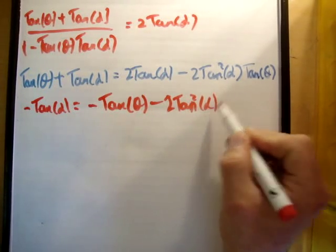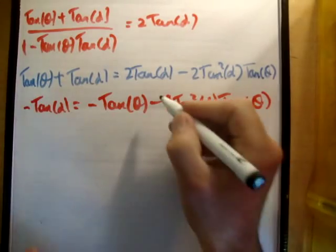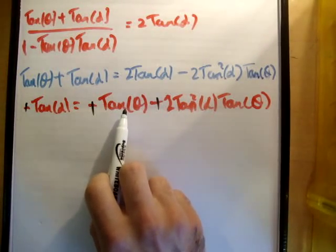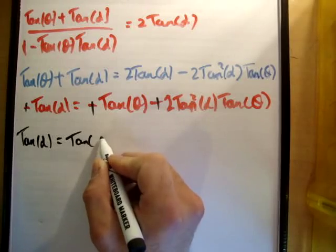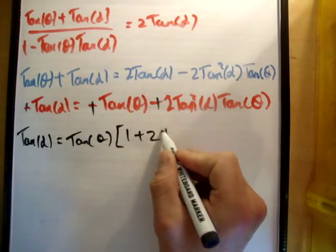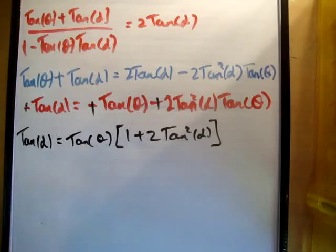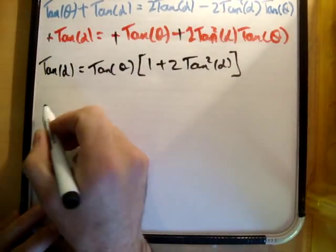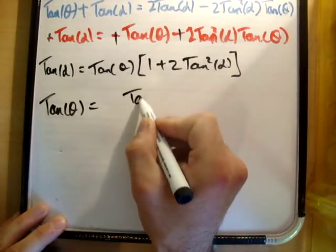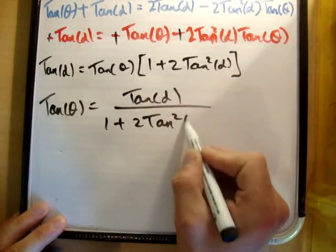We have a tan alpha on both sides, so rearranging gives tan alpha equals tan theta plus 2 tan squared alpha times tan theta. We're getting close because we have tan terms throughout. Since the question asks for tan theta equals something, we isolate tan theta and get tan theta equals tan alpha over 1 plus 2 tan squared alpha.